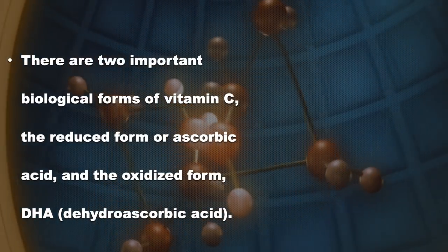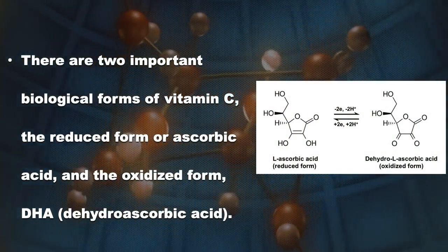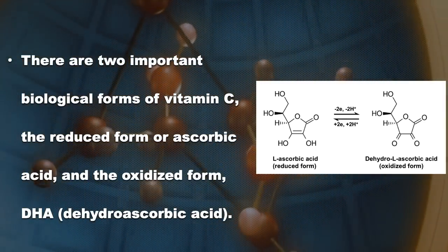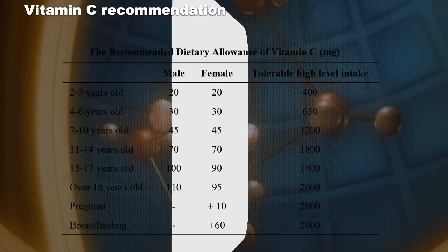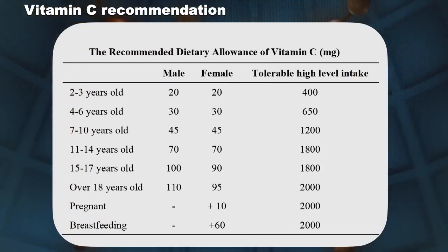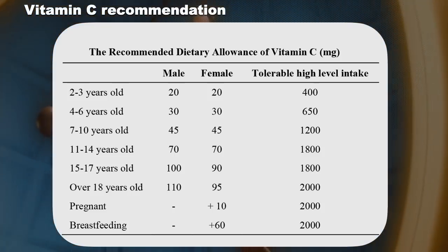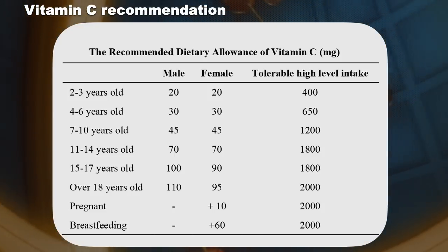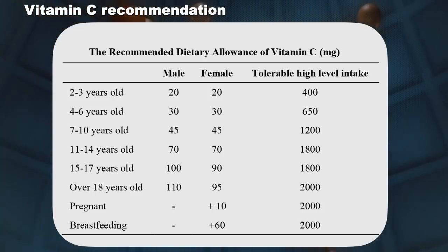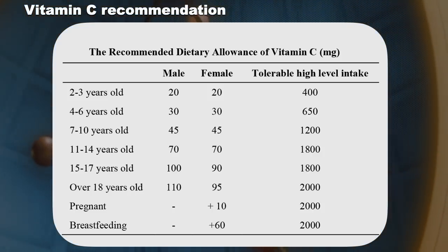In our body, we have two forms of vitamin C: the reduced form called ascorbic acid, and the oxidized form called dehydroascorbic acid. They are interchangeable. Here is a table of the recommended daily allowance of vitamin C in milligrams. The requirement depends on age as well as conditions like pregnancy and breastfeeding. This RDA was based on the amount of vitamin C needed to prevent scurvy.